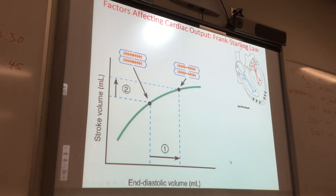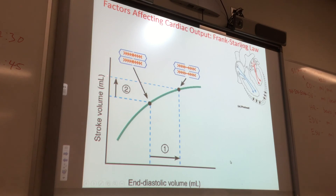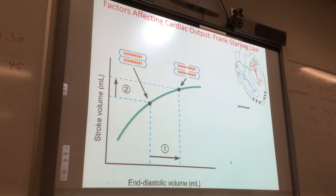Here's a graph with stroke volume on the y-axis and end-diastolic volume on the x-axis. For any end-diastolic volume, there's a corresponding stroke volume. If the end-diastolic volume goes up, the stroke volume goes up. And up here, the sarcomeres are stretched to optimal length, giving you the maximal stroke volume.